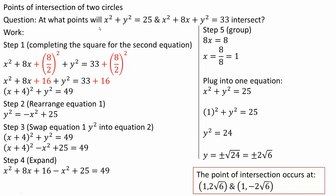Next I'll rearrange equation 1 and isolate y²: y² = -x² + 25, by moving the x² to the right side. Then I'll substitute this expression for y² into equation 2, replacing y² with (-x² + 25), giving (x + 4)² + (-x² + 25) = 49.